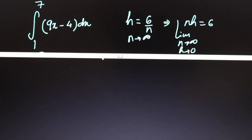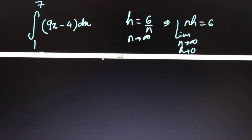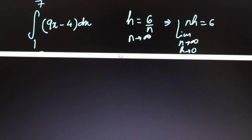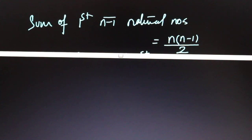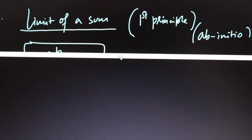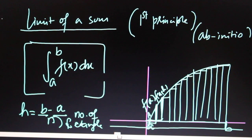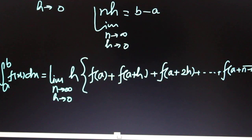With n tending to infinity, nh = 6. Using the formula, the function f(x) here is (9x - 4). Going back to the formula: h times [f(a) + f(a+h) + f(a+2h) + ...], we substitute the lower limit a = 1. The first term is f(a) = f(1), then f(1+h), and so on.